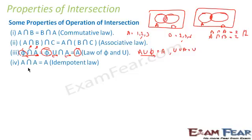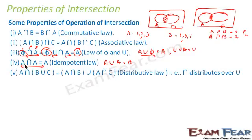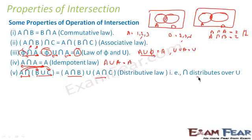The idempotent law states that A intersection A = A, because the common element of A with itself is A. Similarly the distributive law states: A intersection (B union C) = (A intersection B) union (A intersection C). This is the distributive law, and intersection distributes over union.